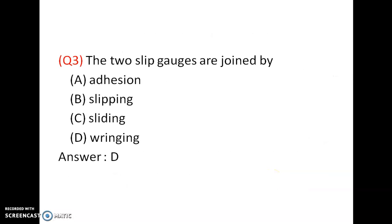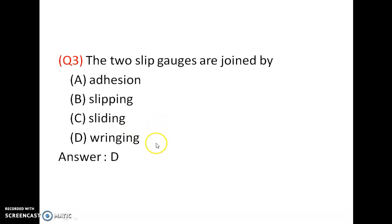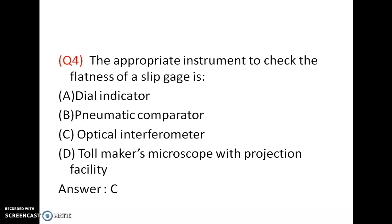Two slip gauges are joined by the process called ringing. The answer is D — it is not aggression, not slipping, and not sliding. We slide in the lateral direction and this process is called ringing.